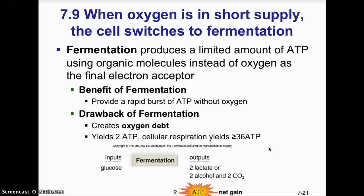The inputs include glycolysis, so glucose goes in. Coming out you have either lactate — which is lactic acid — in lactic acid fermentation, or 2 alcohol molecules — ethanol — in alcoholic fermentation. You also get the production of carbon dioxide gas. The net gain through both processes is those 2 ATP molecules made during glycolysis.